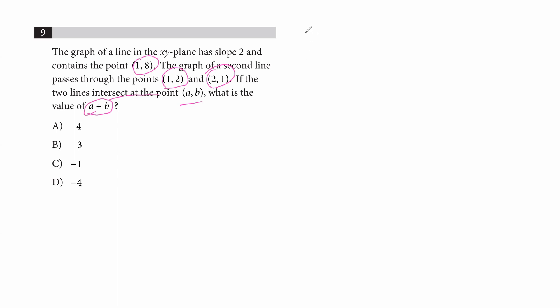To do that, we need to find the equation of both lines and then equalize them. That should give us the intersection point coordinates. First of all, we need to know the equation of lines.